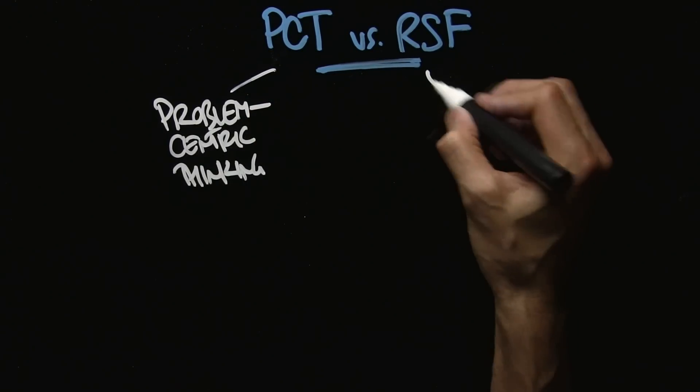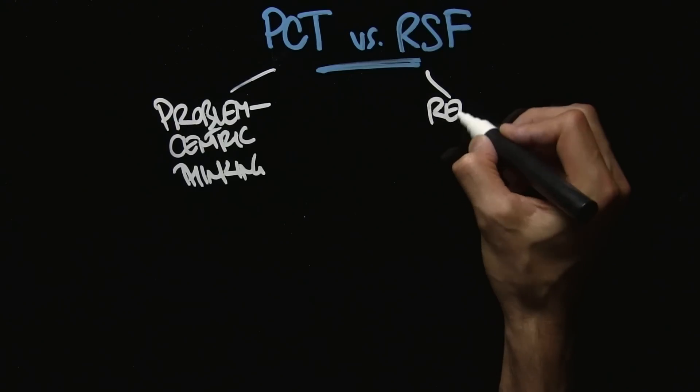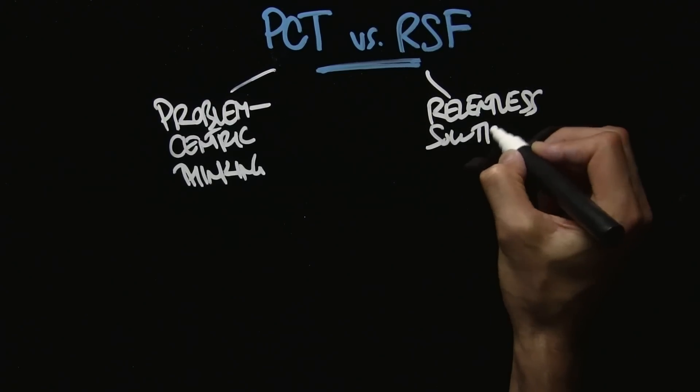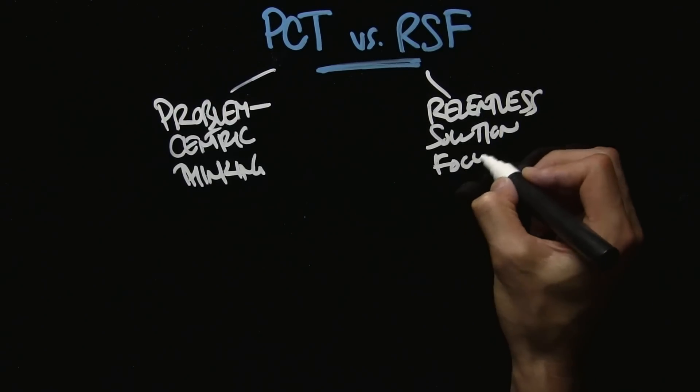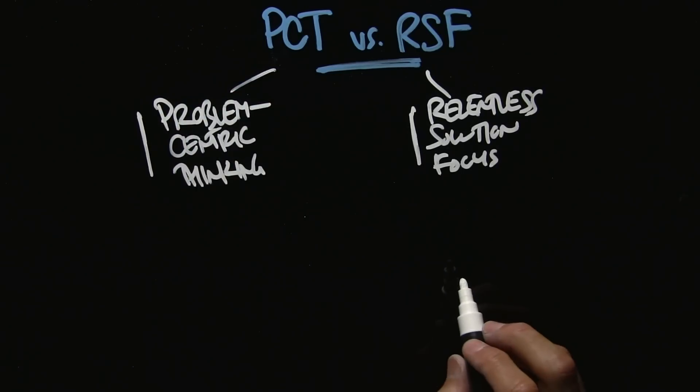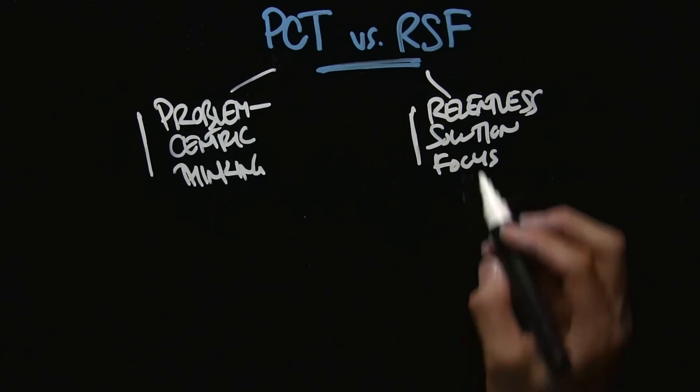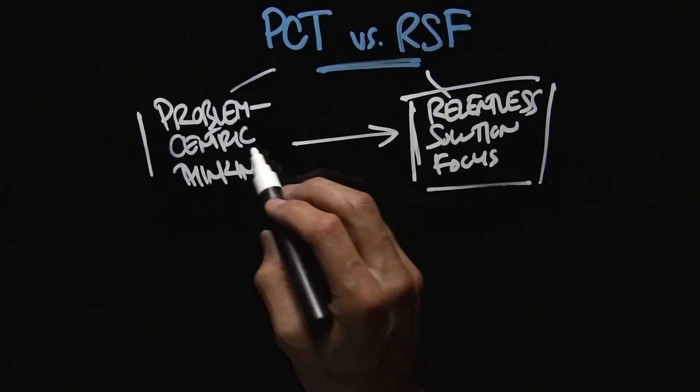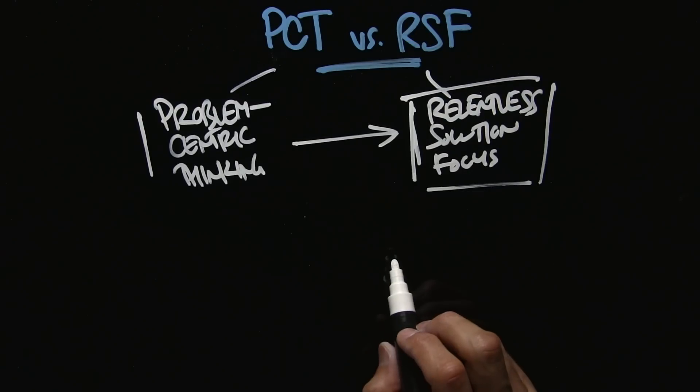And we have relentless, keyword, solution focus. Guess which one is a hallmark of Executive Toughness, of toughness in general. We want to be relentlessly focused on solutions, move from problem to solution focus.